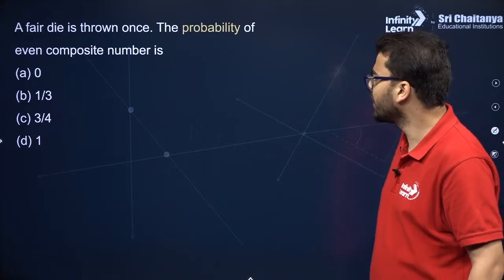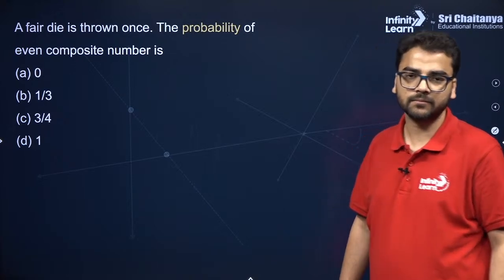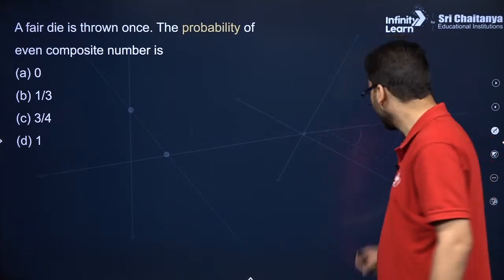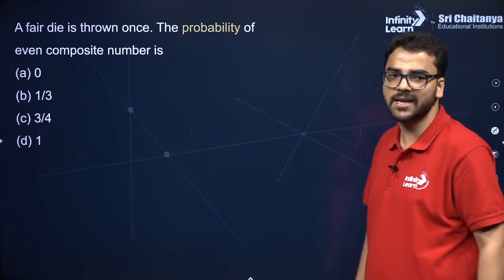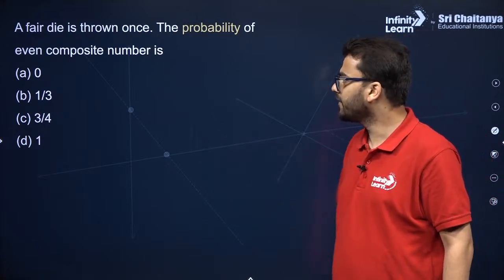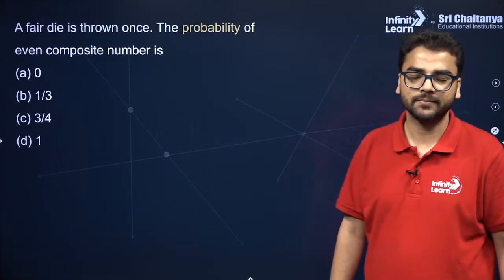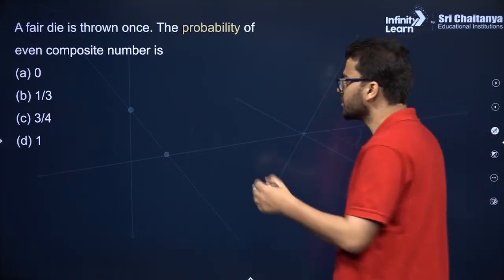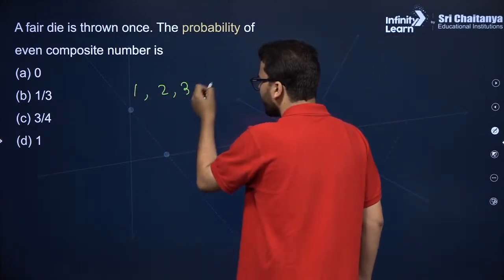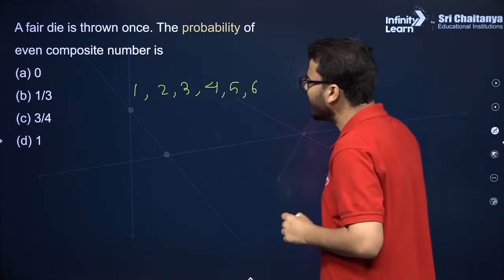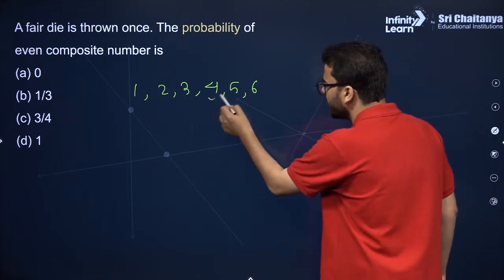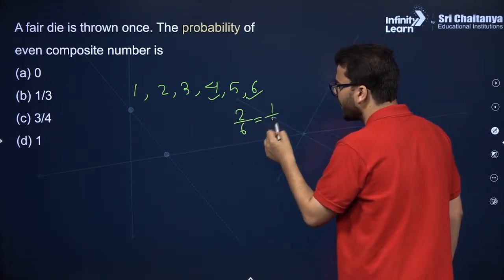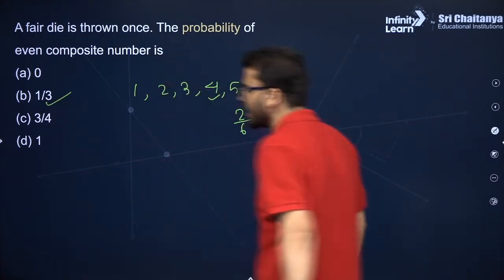A fair die is thrown once. Probability of getting an even composite number. The outcomes when throwing a die are 1, 2, 3, 4, 5, 6. Even composite numbers here are 4 and 6 (composite means more than two factors). So favorable outcomes = 2, and probability = 2/6 = 1/3. Option B is correct.